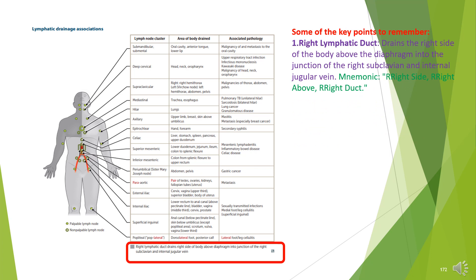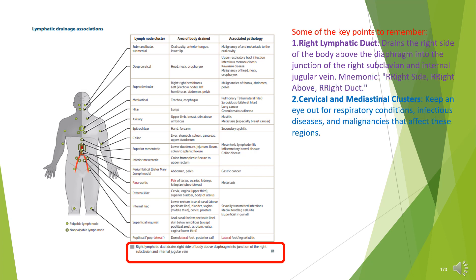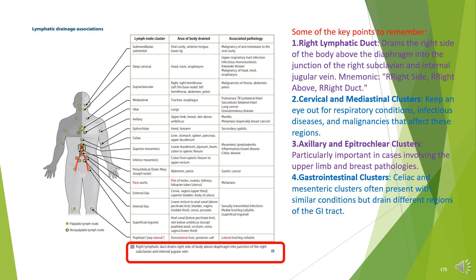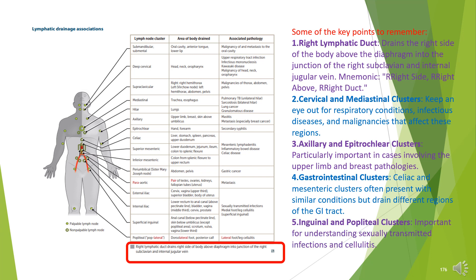Some key points to remember: axillary and epitrochlear clusters are particularly important in cases involving the upper limb and breast pathologies. Gastrointestinal clusters — celiac and mesenteric — often present with similar conditions but drain different regions of the GI tract. Inguinal and popliteal clusters are important for understanding sexually transmitted infections and cellulitis.